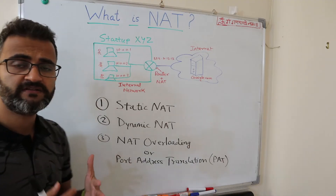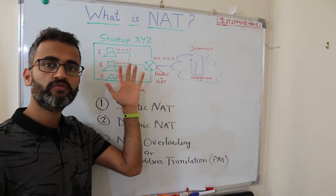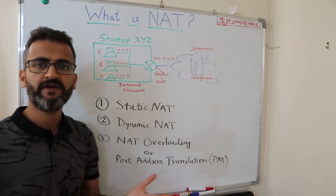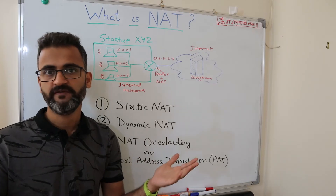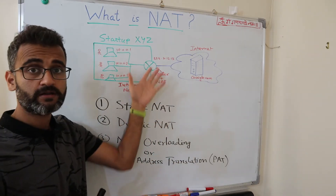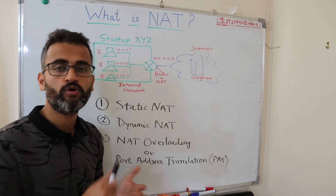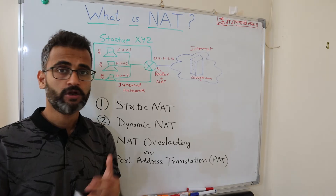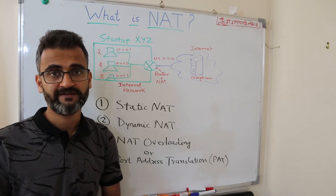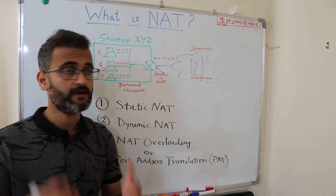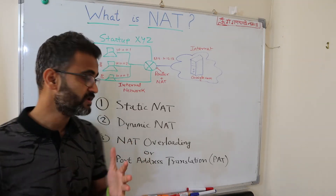Dynamic NAT is a technique where the NAT dynamically assigns a publicly registered IP address to whichever request comes to the NAT device first. Suppose you have developers working in different shifts — 50 developers come in at 9 a.m. and get dynamically assigned the publicly registered IP addresses. But if a 51st employee arrives and wants to access the internet at the same time, all 50 addresses are already assigned. Dynamic NAT is very effective, but in such cases this technique fails, which brings us to the third option: NAT Overloading.